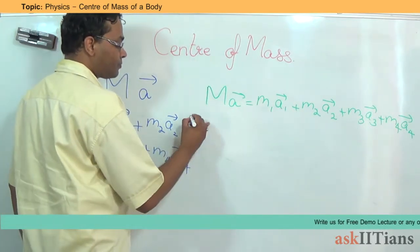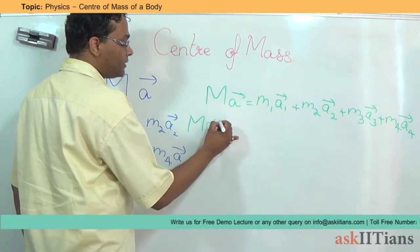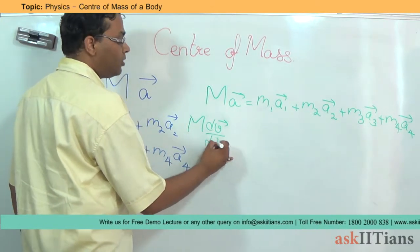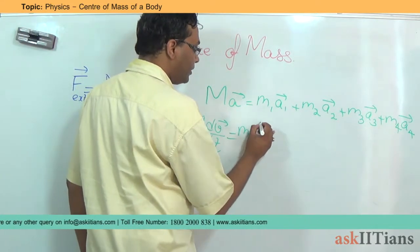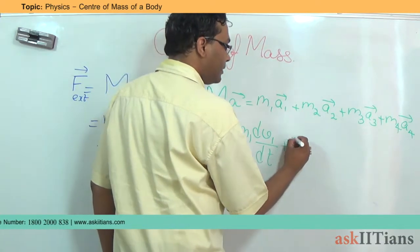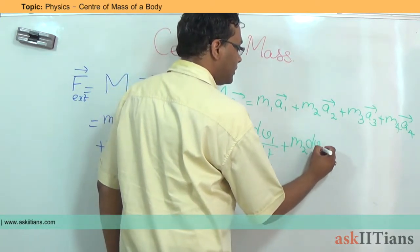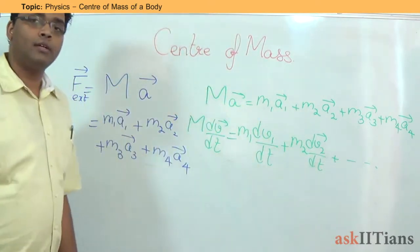Now if I say that, I can write out the acceleration as the change in velocity with time. So M into dv by dt, this can be given by m1 dv1 by dt plus m2 dv2 by dt and so on. I am not writing all the terms.